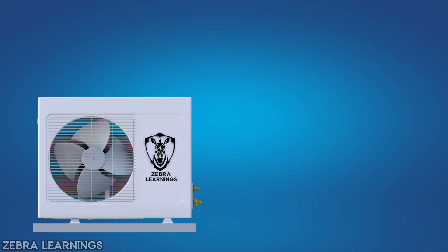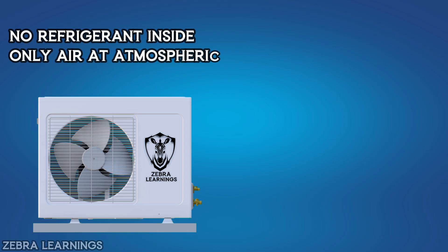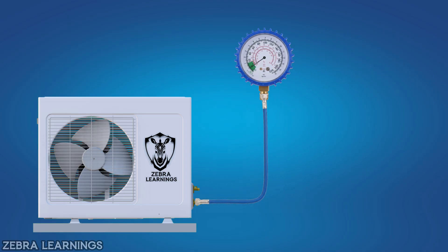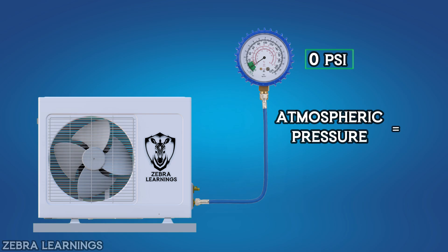Let's take an outdoor AC unit as an example. There's no refrigerant inside, only air at normal atmospheric pressure, which is 14.7 PSI absolute. Now if we check the pressure using a manifold gauge, it'll still show 0 PSI. Even though the actual pressure inside the unit is 14.7 PSI, the gauge reads 0, because it treats atmospheric pressure as 0 reference. To understand this better, let's see a few more readings.